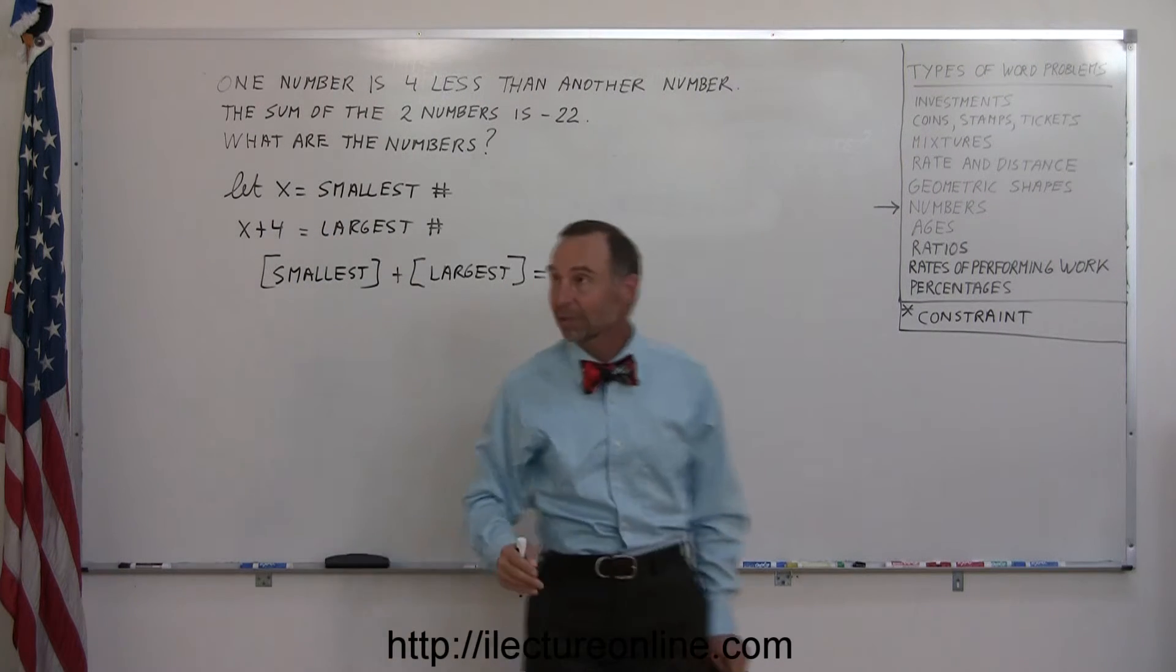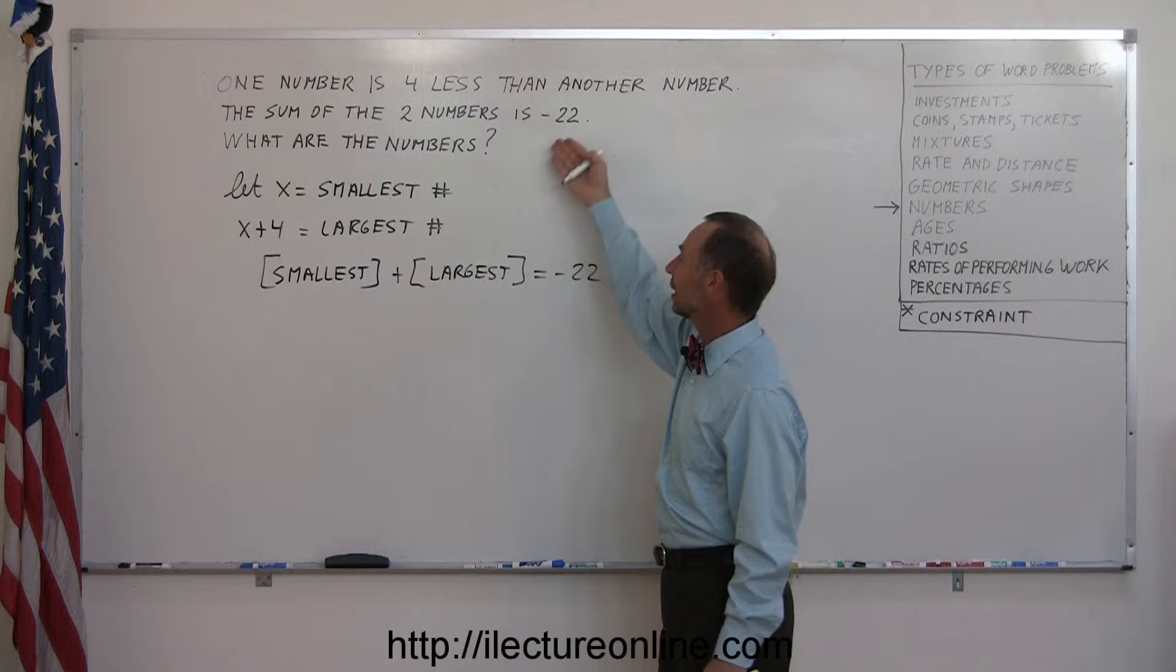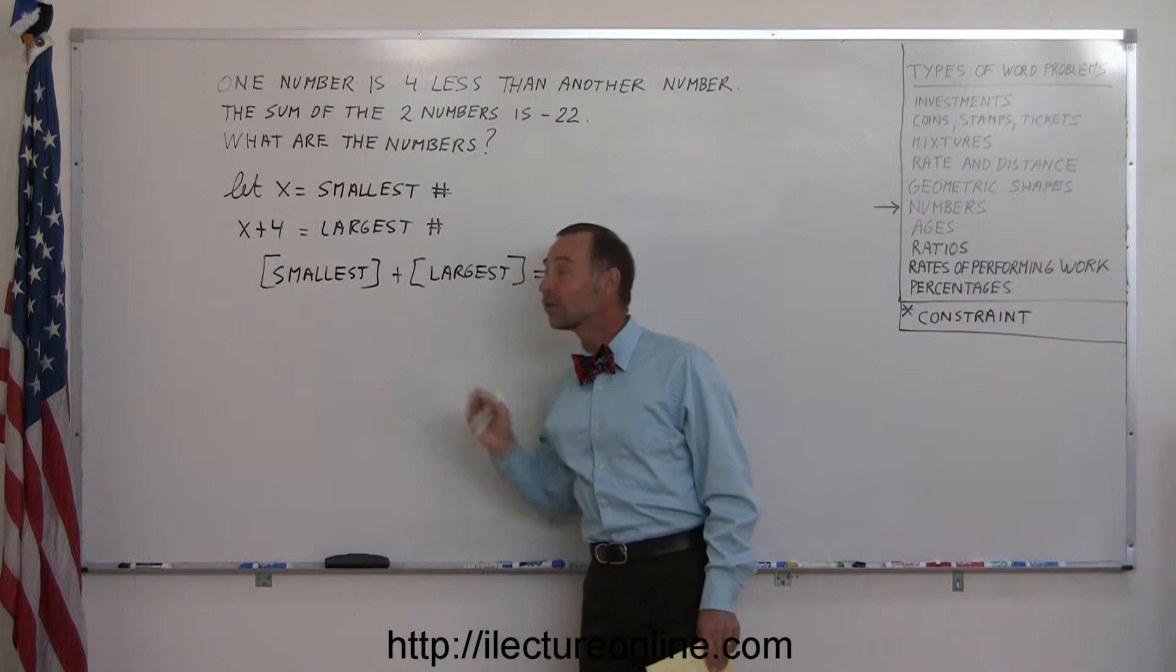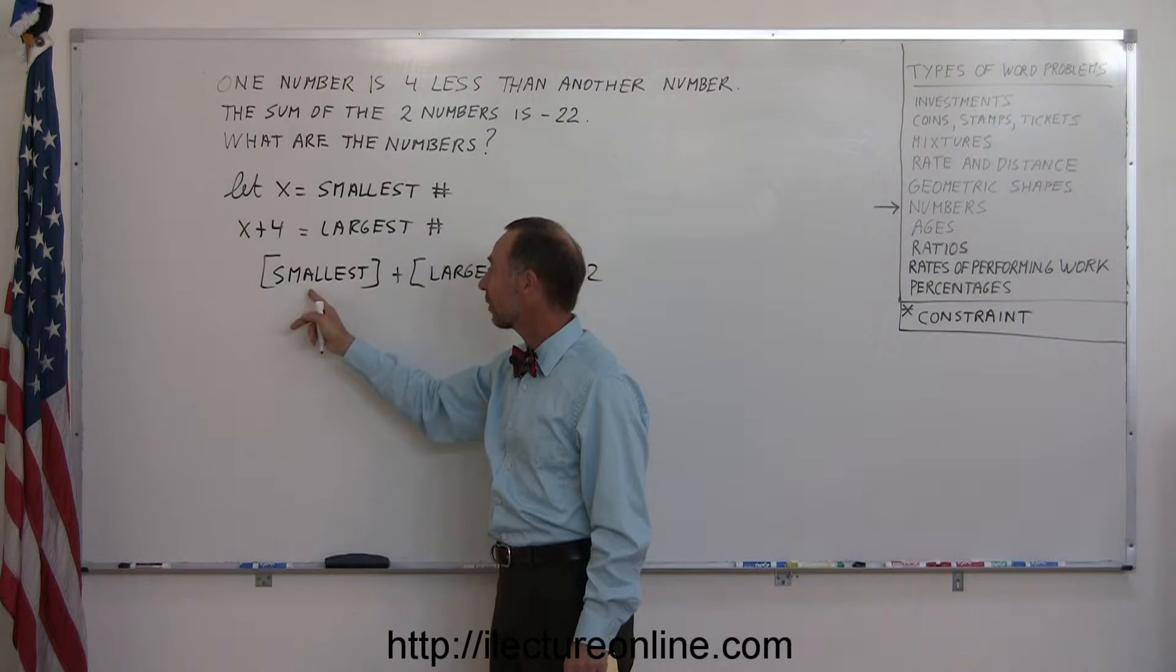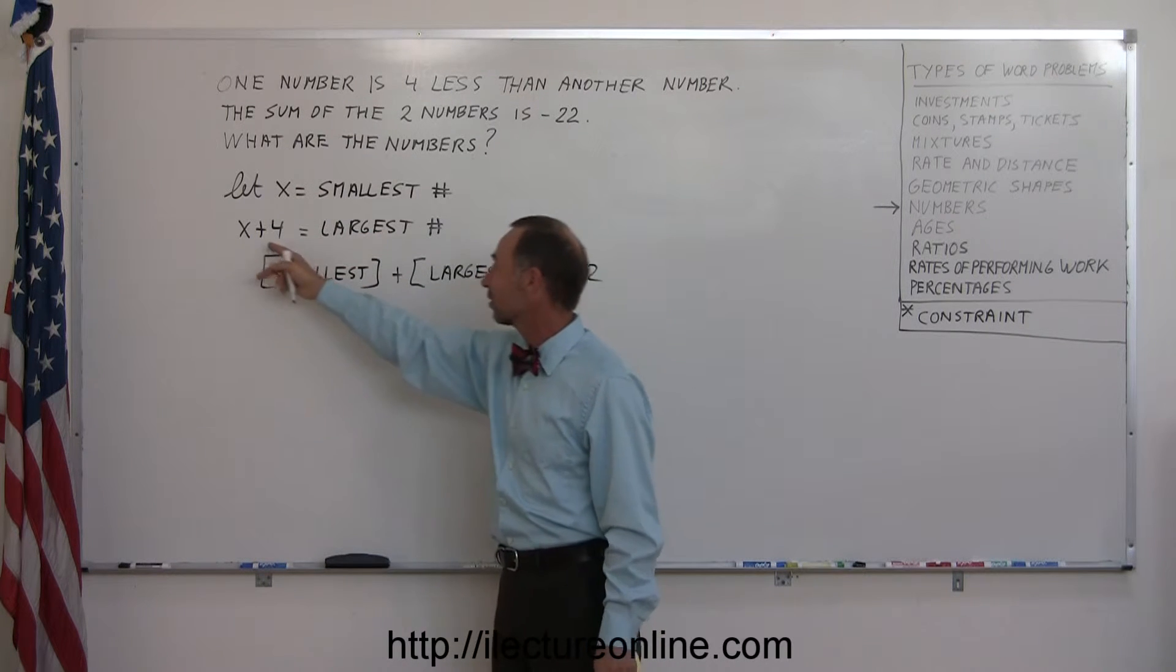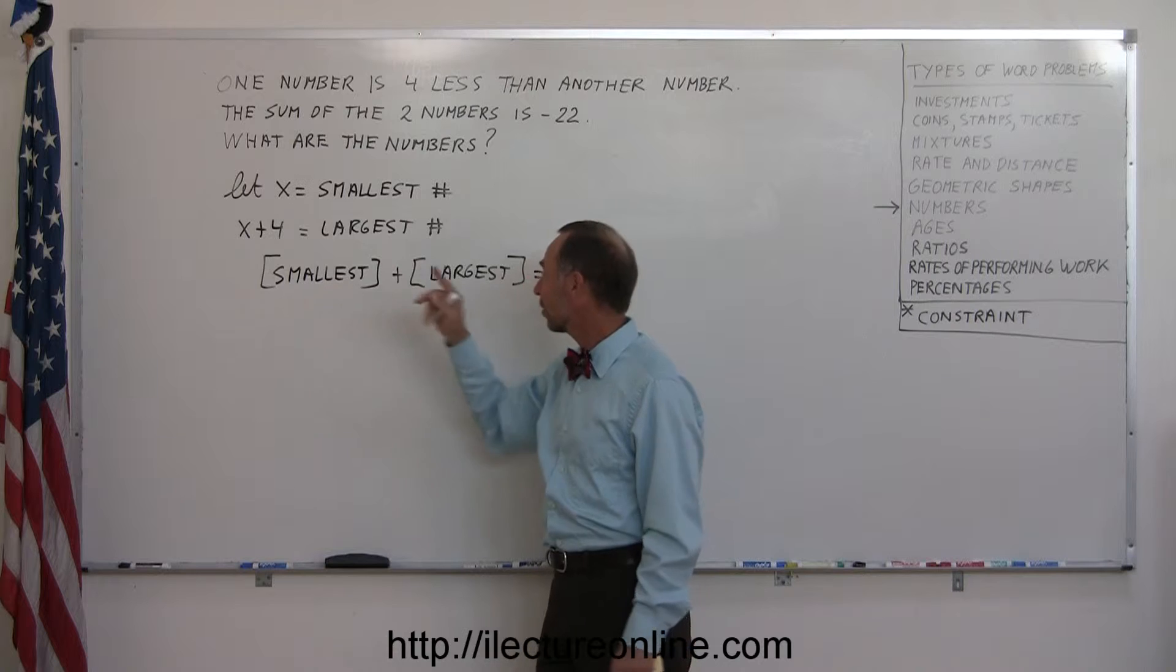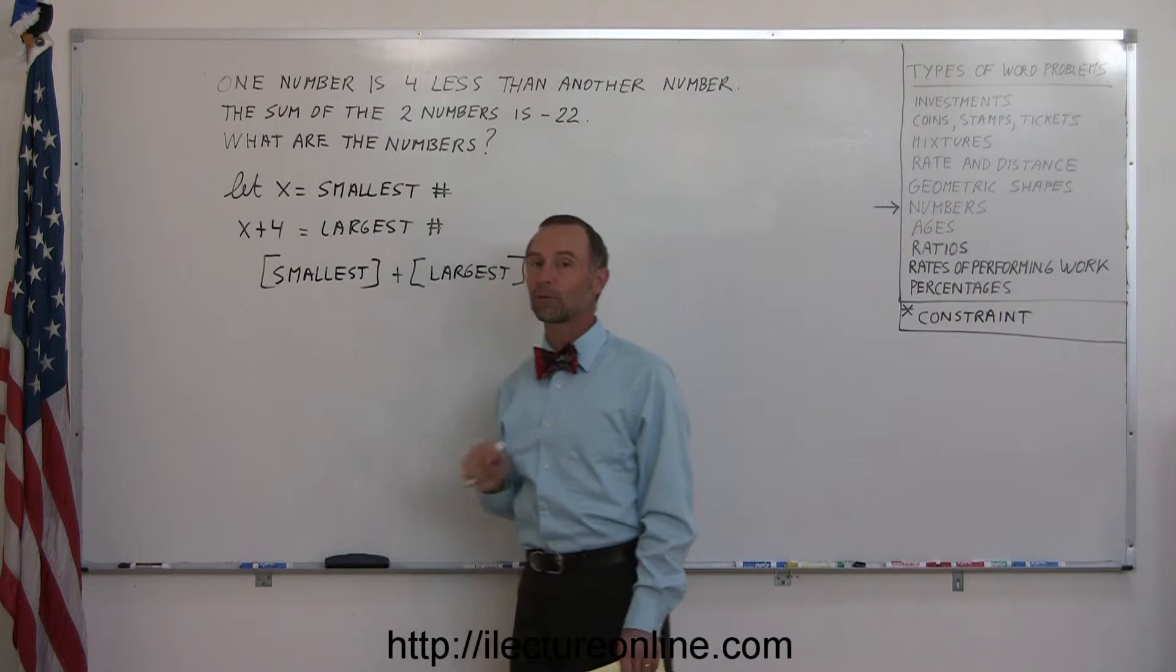I took the sentence of the constraint and turned it into a mathematical equation. Now I'll replace the smallest and the largest by what we defined them as. Since the smallest was defined as x and the largest as x plus four, I'll replace smallest and largest by x and x plus four.